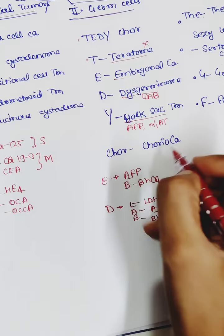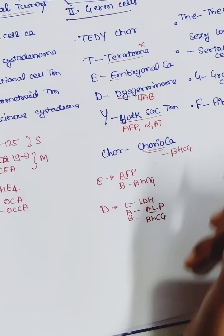The tumor marker for choriocarcinoma is again like molar pregnancy. This is beta-hCG. So in this chart we can also add tumor markers to make the chart very simple.